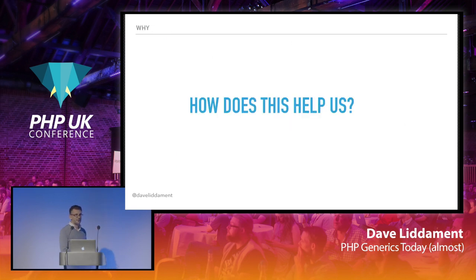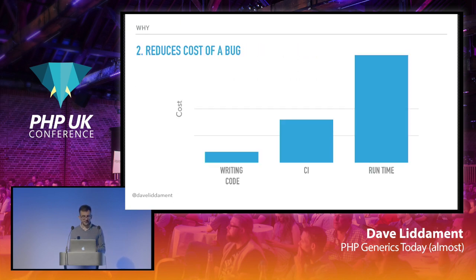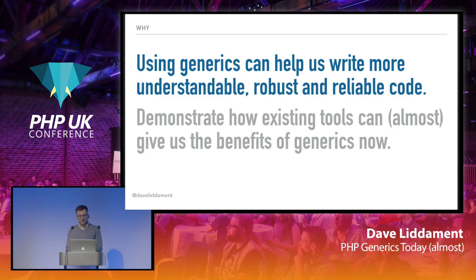You might be thinking, how does this actually help us? It helps us just like the type information on the process method does — we're communicating additional type information to other developers and to tools like static analyzers. For example, knowing an array key is of type string and the value is of type Translation is useful to developers and static analyzers, because they can find bugs sooner. The sooner we find bugs, the cheaper they are to fix. If we could get generics into the language, the type system already offers benefits in finding bugs earlier — and the missing piece currently in PHP's type system is generics.